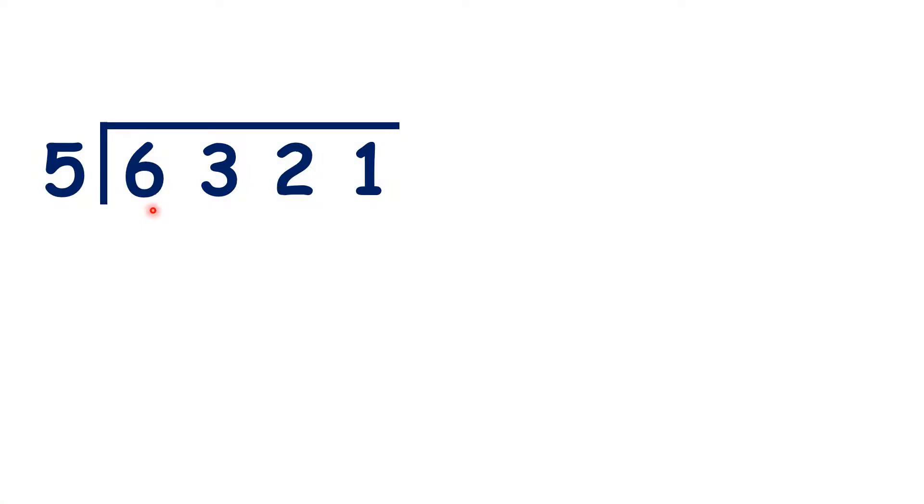So here we have 6,321 divided by 5, and you might have spotted straight away that 6,321 isn't a multiple of 5. We will get a remainder, but rather than just writing our remainder, what we'll learn to do here is express our remainder in decimal form.